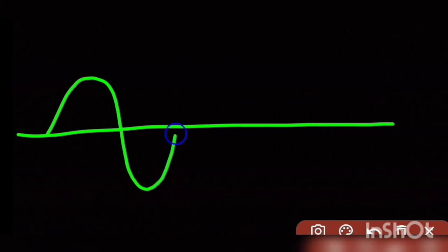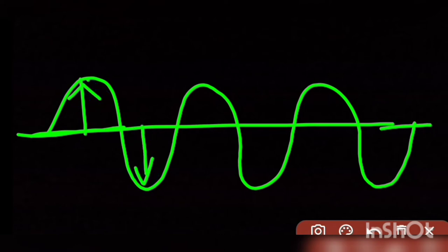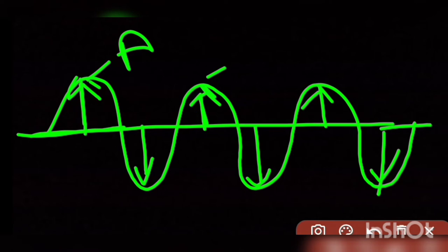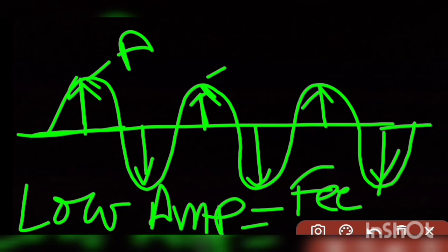Similarly, for faint sound: here we have a wave moving from left to right. That is its mean position and that is its extreme position. The distance between mean position and extreme position is the amplitude of the wave. Lower the amplitude, we get faint sound. The height of the wave is very low, so when low amplitude, we get faint sound. Lesser the amplitude of the vibrations, the sound produced is faint.